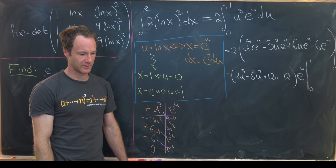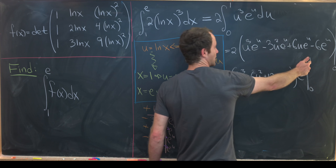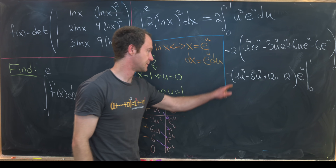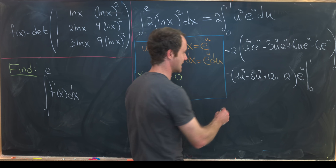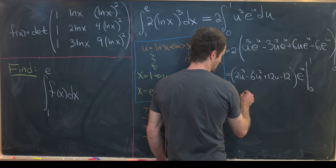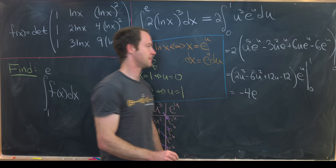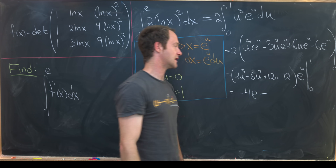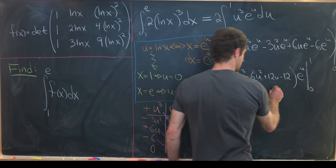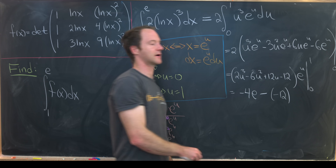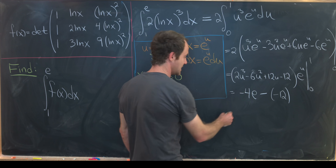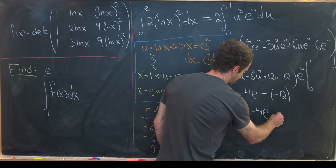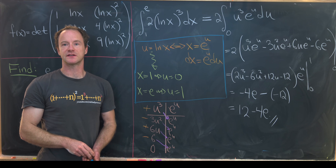Plugging in u = 1: (2 − 6 + 12 − 12)e = −4e. Plugging in u = 0: (−12)e⁰ = −12, which we subtract. So the final answer is 12 − 4e, and that's a good place to stop.